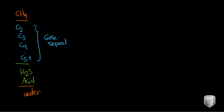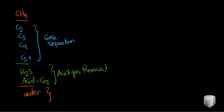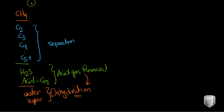After condensate separation, we remove H2S and carbon dioxide by acid gas removal. After that, we need to remove water. Water is removed during the three-phase separator, but if we have water vapor, it will be removed by dehydration. The process of removal of water vapor is called dehydration, and it is done after acid gas removal or sweetening.